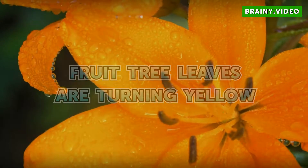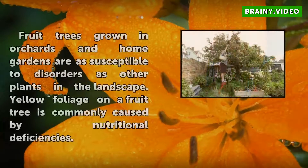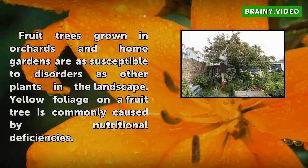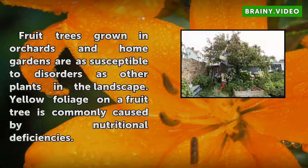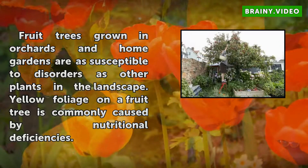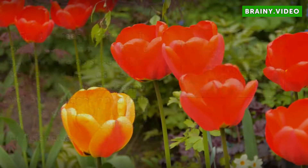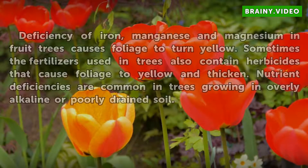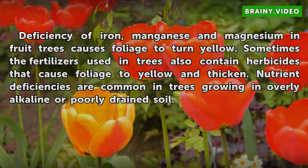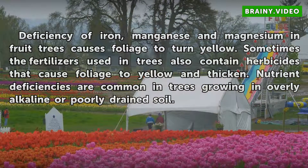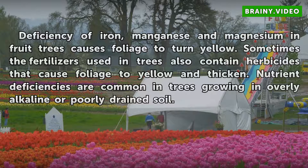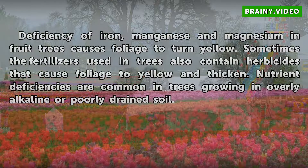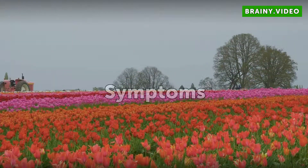Fruit tree leaves are turning yellow. Fruit trees grown in orchards and home gardens are as susceptible to disorders as other plants in the landscape. Yellow foliage on a fruit tree is commonly caused by nutritional deficiencies. Deficiency of iron, manganese, and magnesium causes foliage to turn yellow. Sometimes fertilizers used on trees also contain herbicides that cause foliage to yellow and thicken. Nutrient deficiencies are common in trees growing in overly alkaline or poorly drained soil.